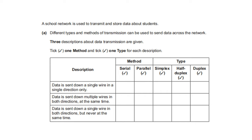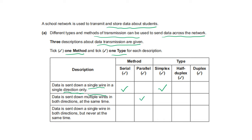A school network is used to transmit and store data about students. Three descriptions about data transmission — tick one method and one type for each. Data is sent down a single wire in a single direction only — single wire is serial, single direction is simplex. Data is sent down multiple wires in both directions at the same time — multiple wires is parallel and both directions is duplex. Data is sent down a single wire in both directions but never at the same time — single wire is serial and that is half duplex.